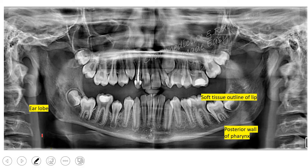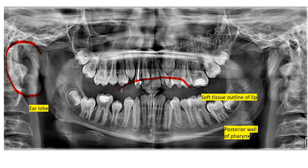In this radiograph we can see the earlobe. We can also see at the center the shadow of the lip, and this is the mouth opening used to hold the bite. This is the posterior wall of the pharynx, which is evident on both sides.